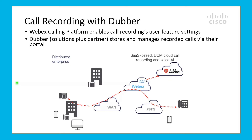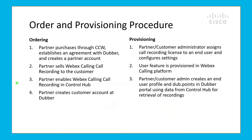Setting up call recording can be divided into two steps: ordering and provisioning. First, the partner purchases through CCW and establishes an agreement with Dubber and creates a partner account. Then the partner has the option to sell Webex Calling call recording to a Webex Calling customer and also enable the same customer for this option within the Control Hub. The partner then creates a customer account for Dubber portal access.